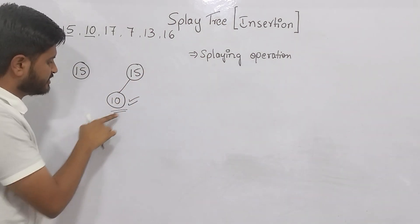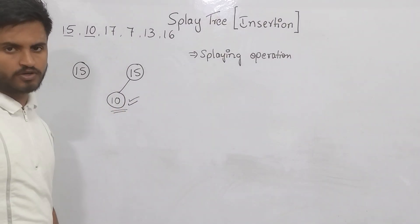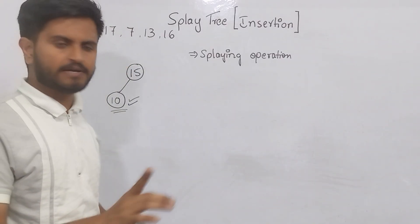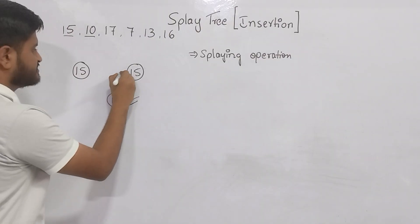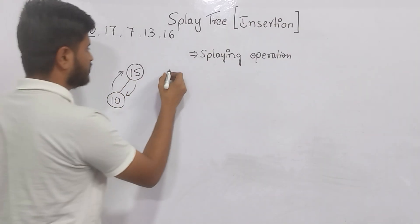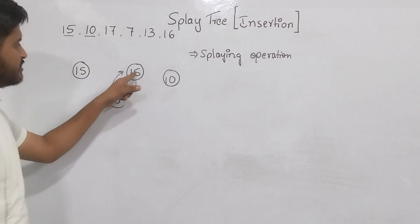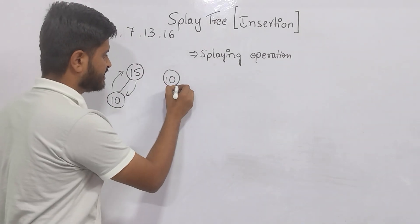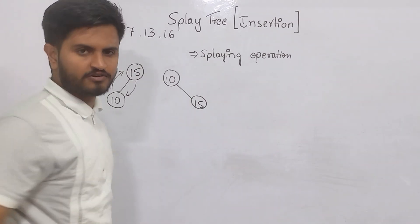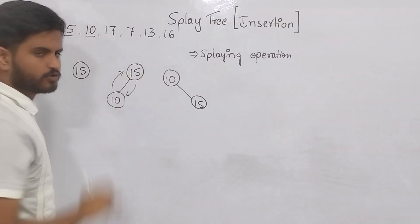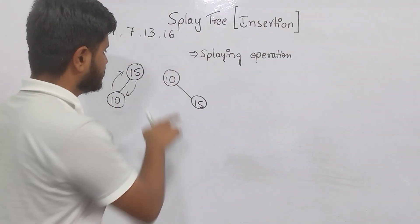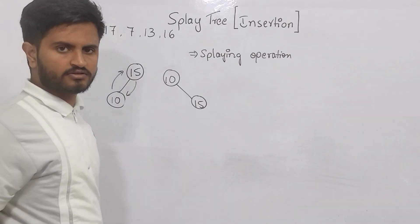I inserted 10 and must make it the root node. Without worrying about zig rotation or zag rotation, step by step, I will exchange 10 with 15. Since we have only two elements, just swap — 10 comes here. The remaining element is 15, which is greater than 10, so it goes to the right child. We have converted the inserted node into the root node.